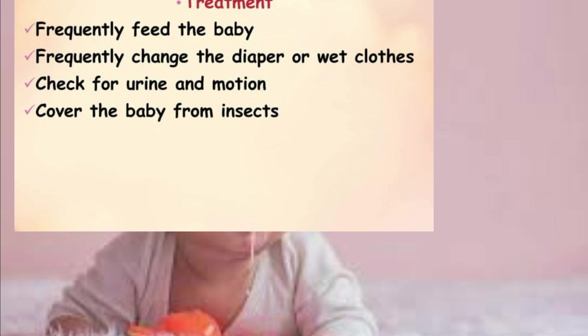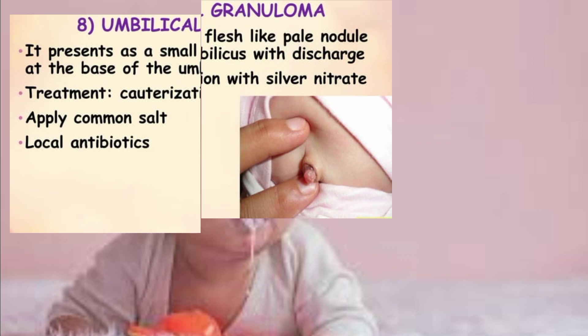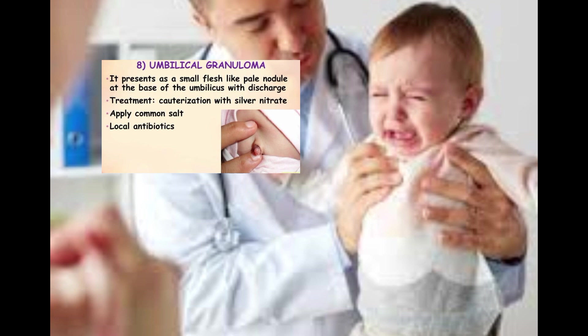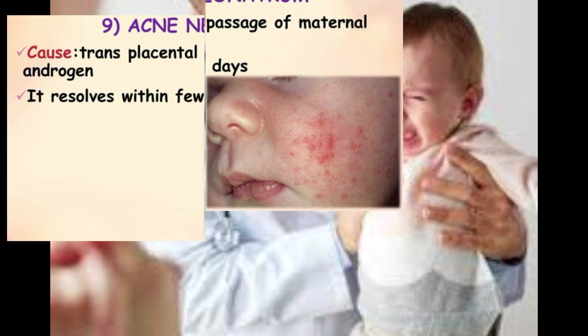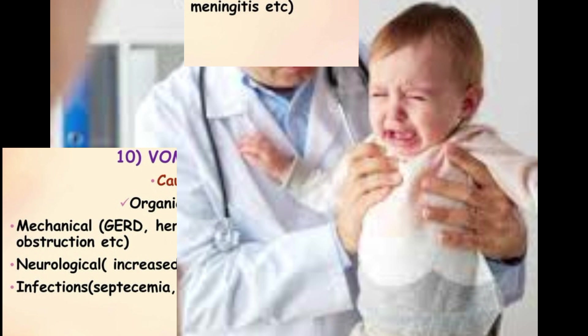Also cover the baby from insects. Umbilical granuloma presents as a small flesh-like pale nodule at the base of the umbilicus with discharge — treat with cauterization using silver nitrate and apply common salt plus local antibiotics. Acne neonatorum is caused by transplacental passage of maternal androgens and resolves within a few days.